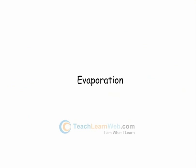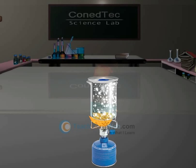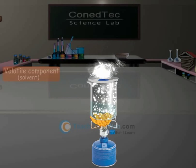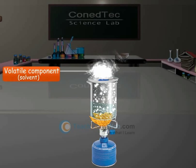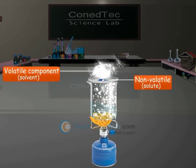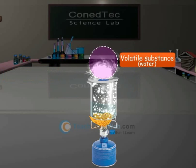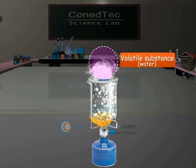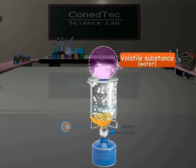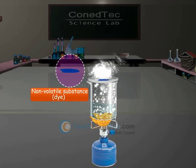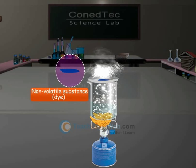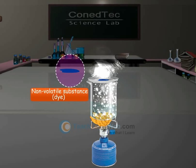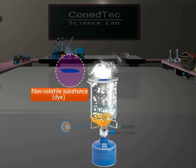Evaporation. This is a process which involves the separation of a volatile component, that is the solvent, from its non-volatile solute. Volatile substances are the ones which give off vapors at different temperatures, whereas a non-volatile substance is not capable of changing itself from a solid or a liquid to gas.